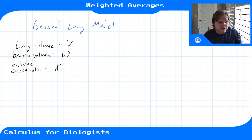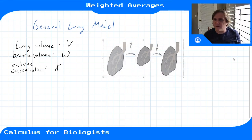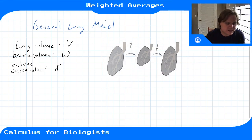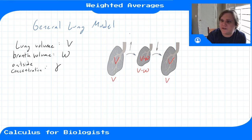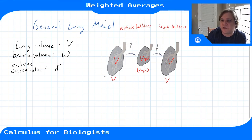Our lung model looks like this — I'll put concentrations in red. The volumes are: the original volume V, then at the intermediate step it has volume V minus W when we exhale W liters, and then volume V again when we inhale W liters back. So we go from V to V minus W on exhalation, and then back up to V on inhalation.